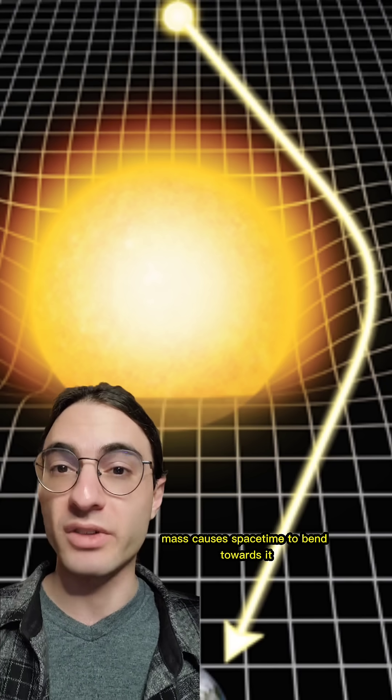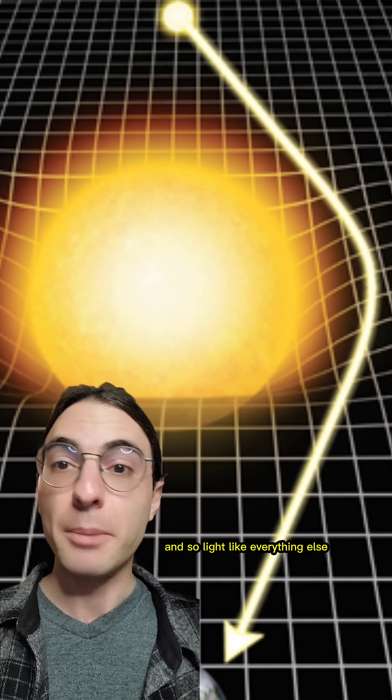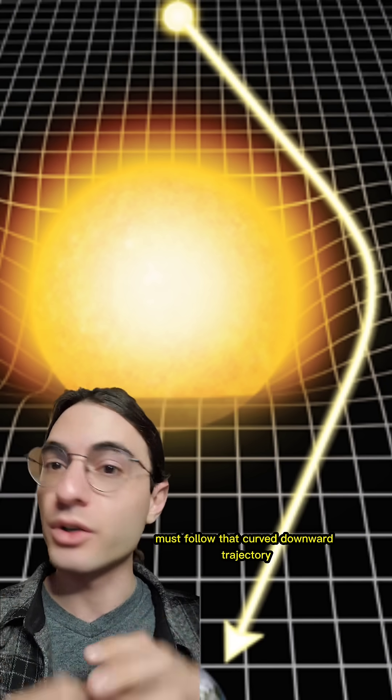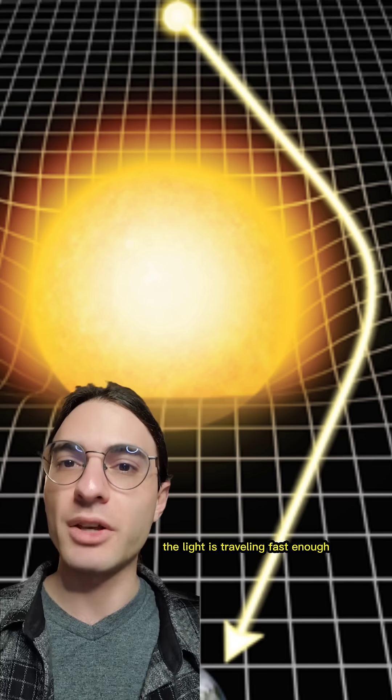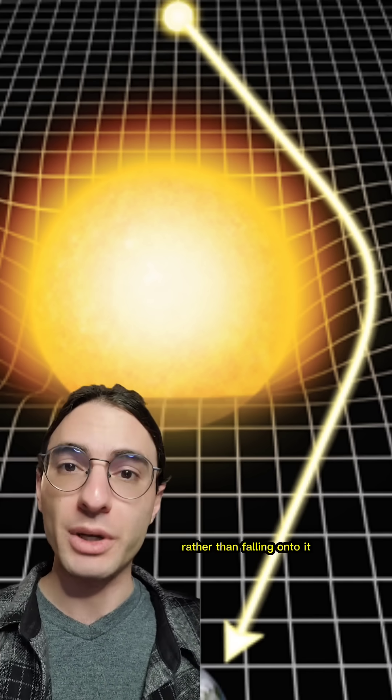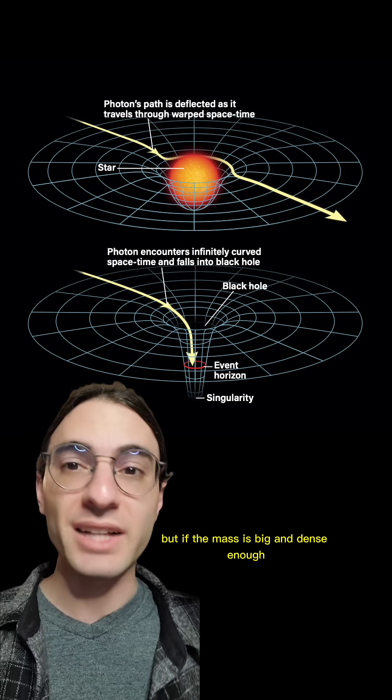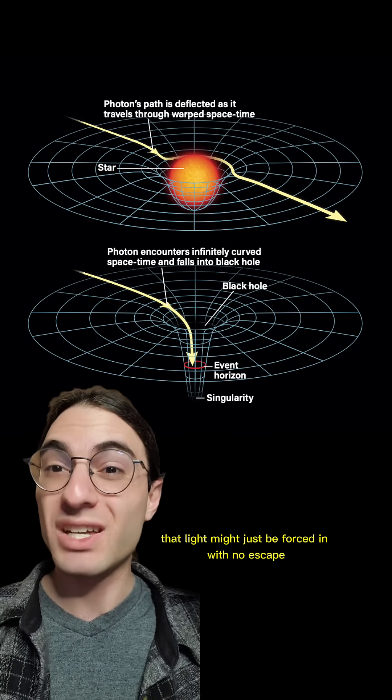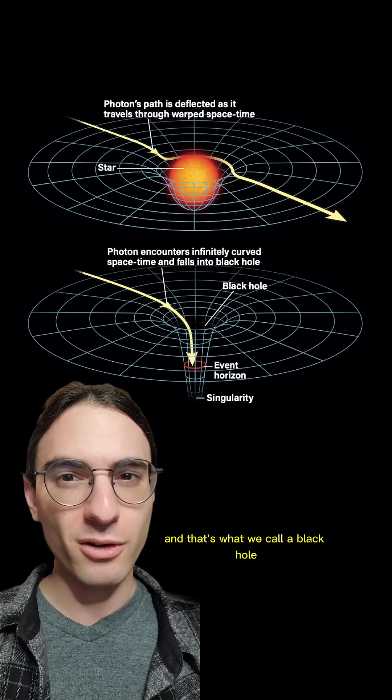Mass causes spacetime to bend towards it, and so light, like everything else, must follow that curved downward trajectory. Now, most of the time, the light is traveling fast enough to just be bent towards the mass rather than falling onto it. But if the mass is big and dense enough, that light might just be forced in with no escape. And that's what we call a black hole.